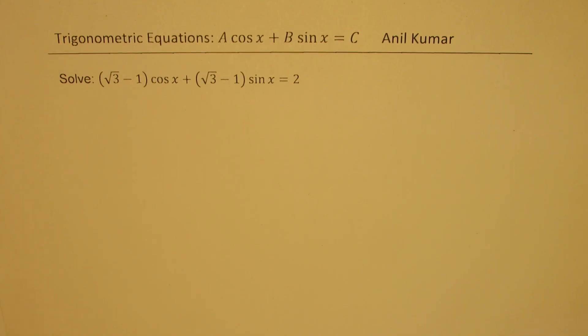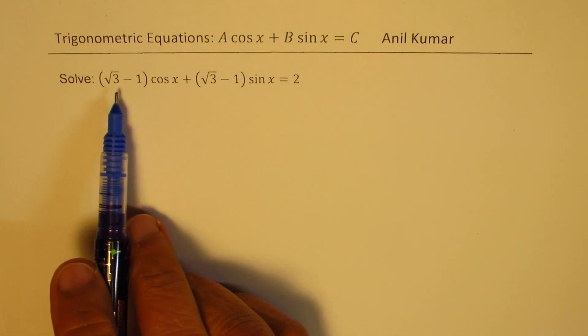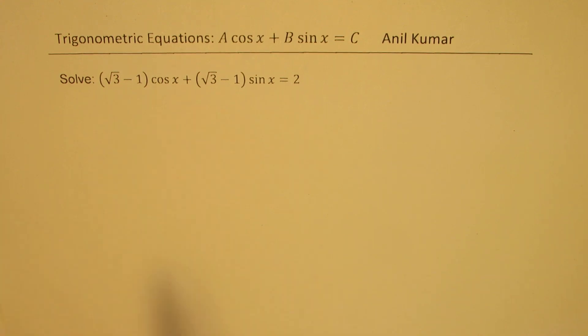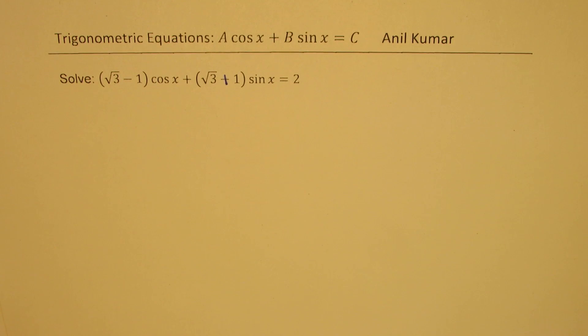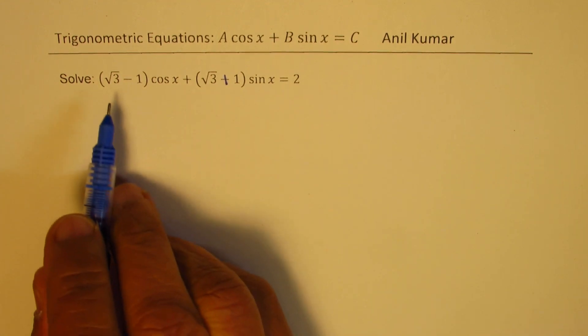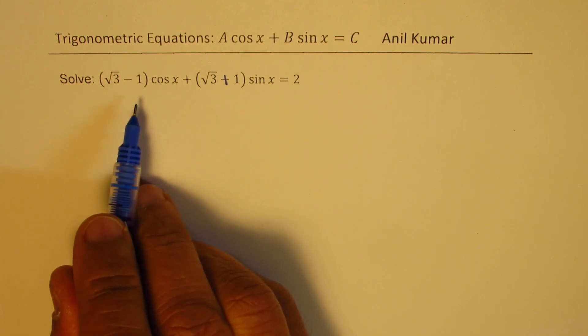I'm Anil Kumar, welcome to my series on trigonometric equations. There is a very interesting equation to solve. We need to solve square root of 3 minus 1 times cos x plus square root of 3 plus 1 times sine x equals to 2.